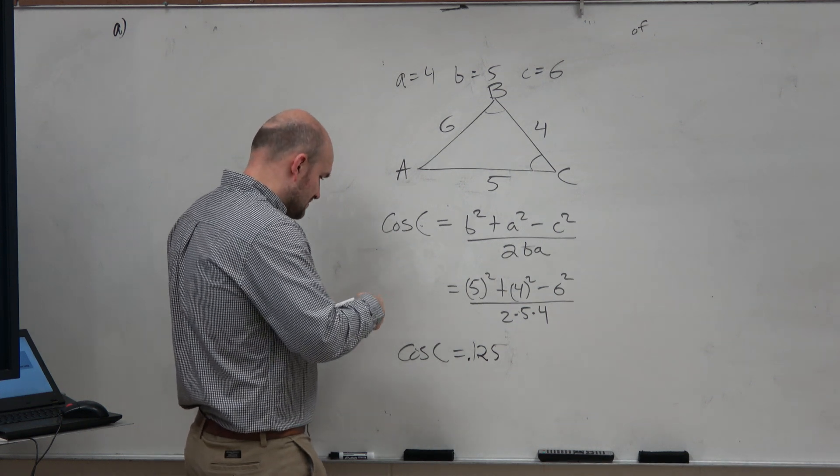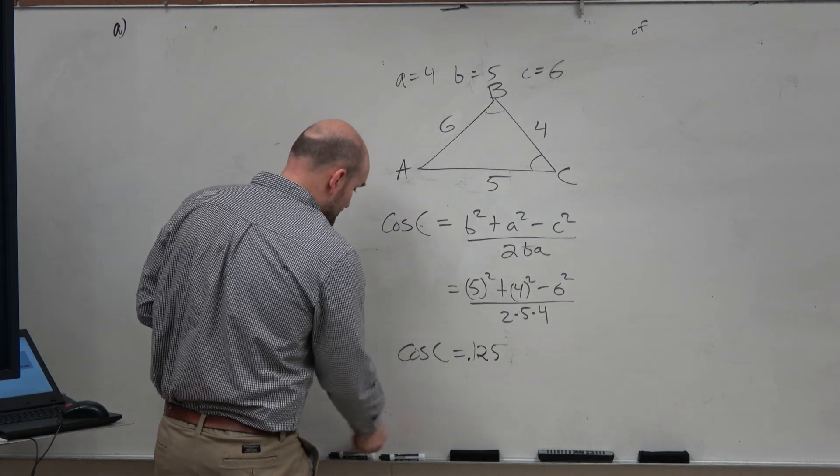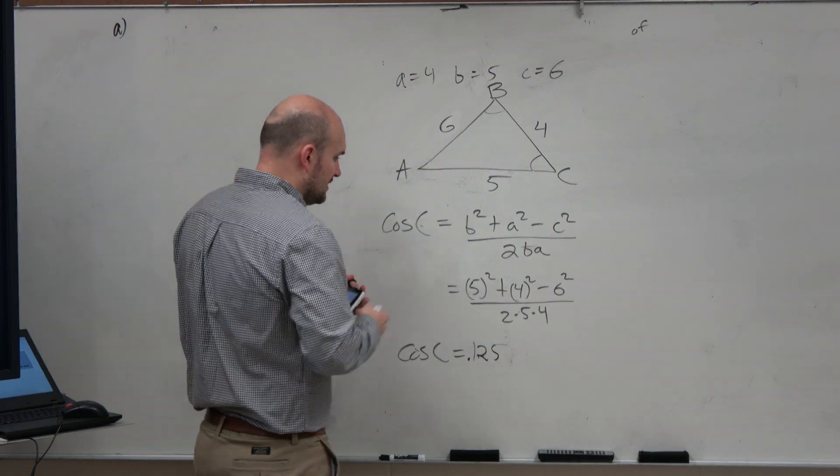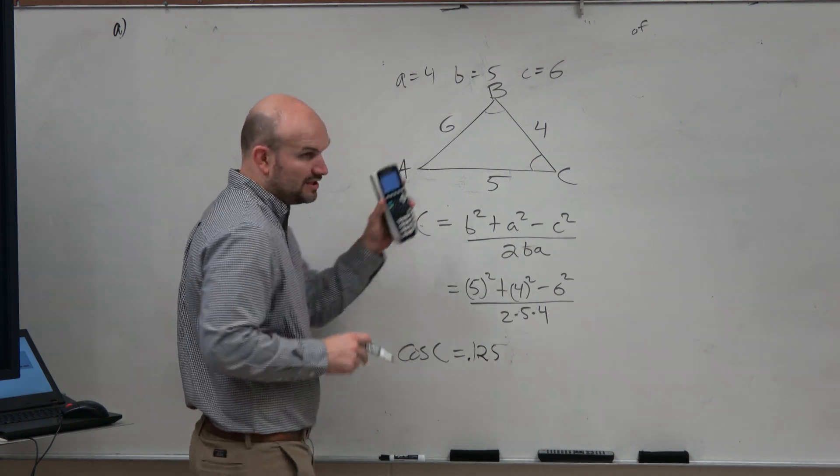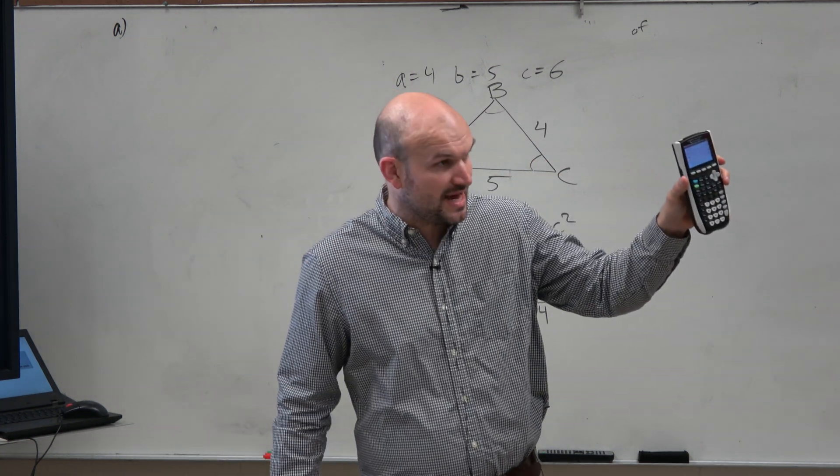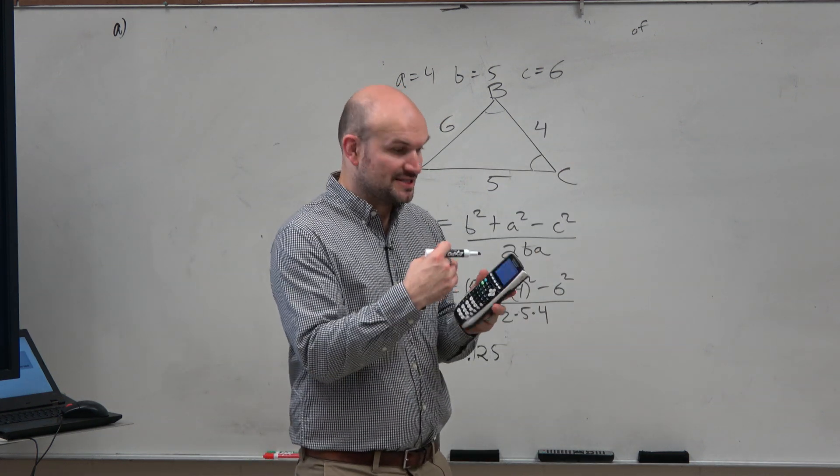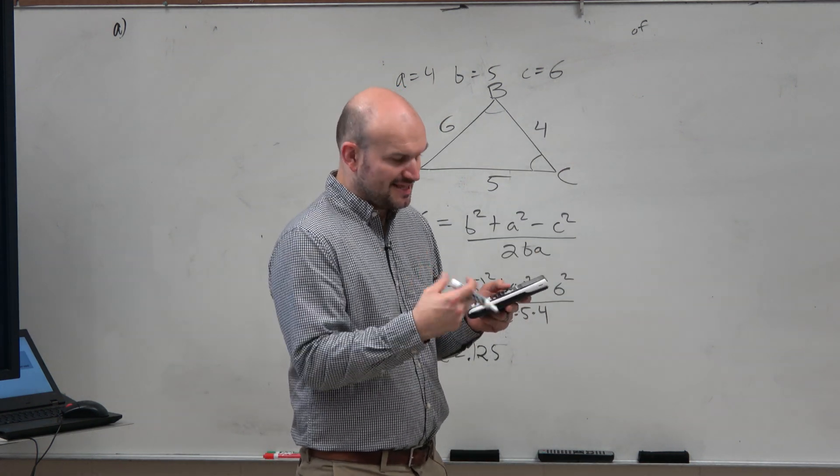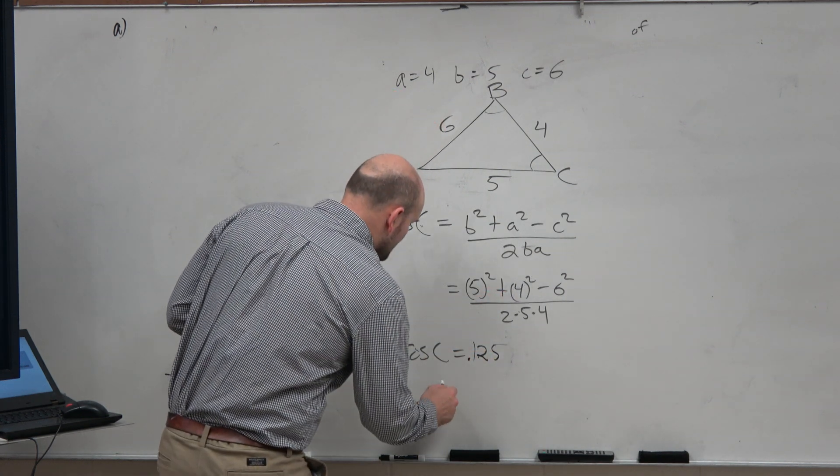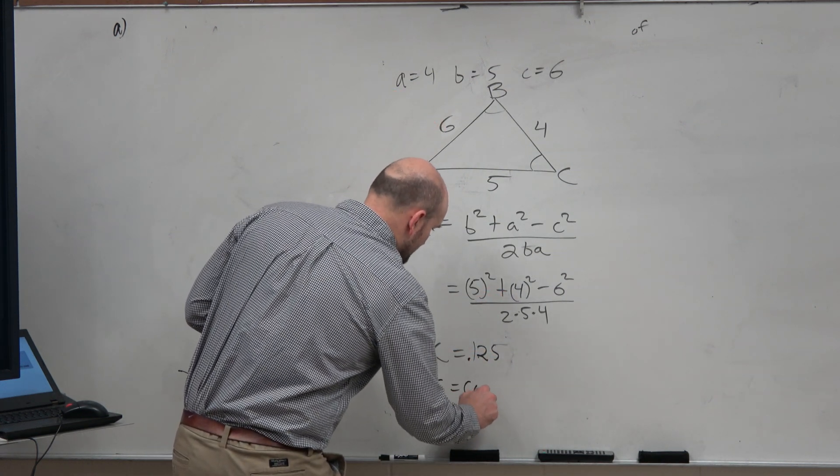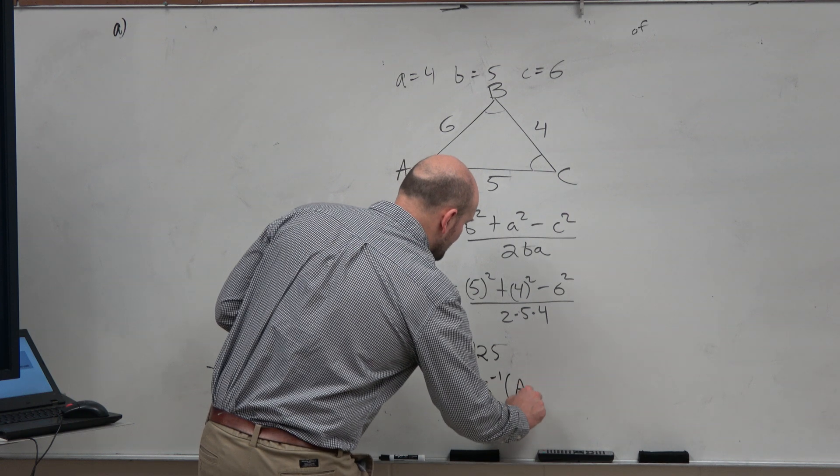So how do you find that? Well, all you're going to do is use the cosine inverse. Now, typically, what I like to do when a calculator, obviously, this answer, I could easily retype that. But remember, when you're using a calculator, you can always use the last answer. So I always like to use, or at least get in the habit, of just typing in C equals cosine inverse of the last answer.